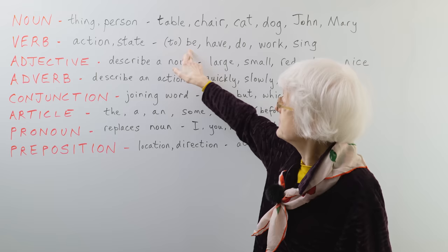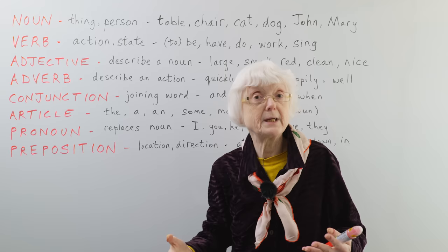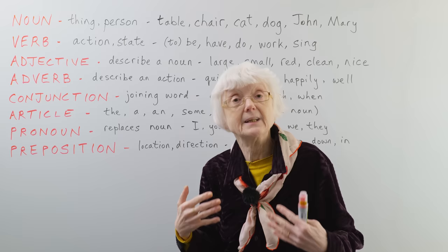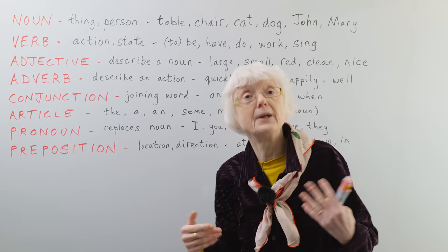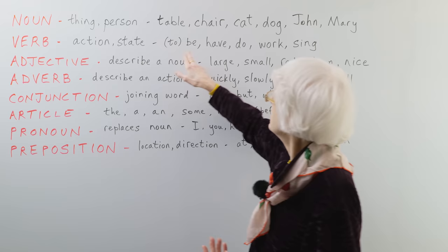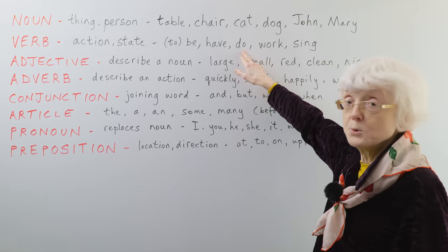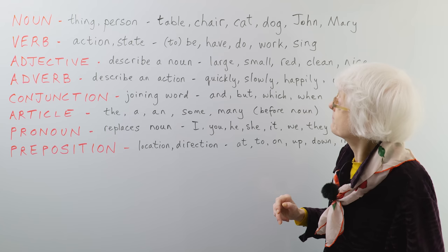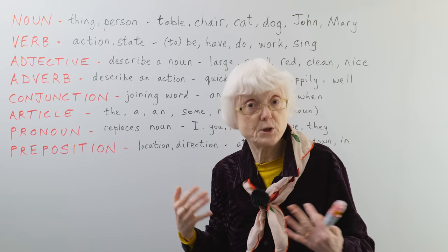To be is a verb of state because it just means you exist or something exists, it is to be. That's a state rather than an action, but most verbs are actions. So to be, to have, to do, to work, to sing. Anything to do with something that you do, an action, really.